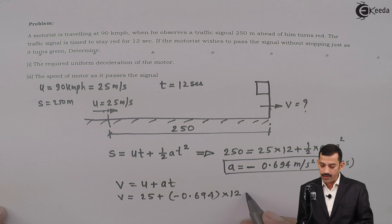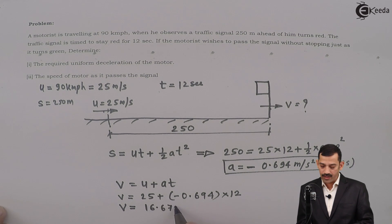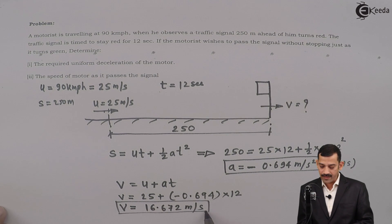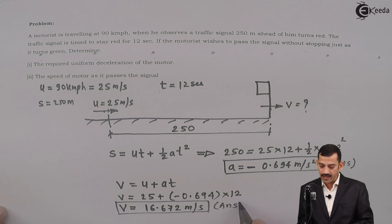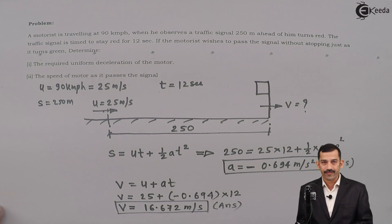Using a calculator, V comes out to be 16.672 meters per second. This is the final answer. First answer: acceleration is minus 0.694 meters per second squared. Second answer: final velocity is 16.672 meters per second. Thank you.